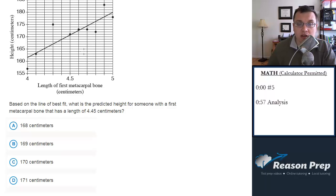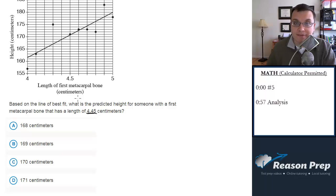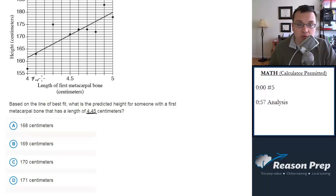So we're going to use the line here. We're going to start with a length of 4.45 centimeters and then we're going to find the height based on what the line tells us. Here is our scale on the bottom — it goes from 4 to 4.5, and each one of these is 0.1 in distance. So 4.45 is going to be right in between 4.4 and 4.5.